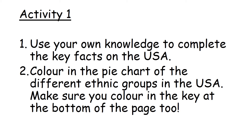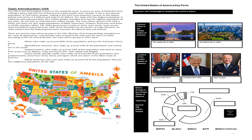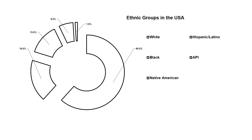Your first activity for today is to use your own knowledge to complete the key facts on the USA. It says to colour in the pie chart of the different ethnic groups in the USA, and make sure you colour in the key at the bottom of the page too. However, if you don't have access to this, you can just write down in your jotter the percentage that links to each ethnic group. These two pages from your booklet are available via Teams in the files folder, and you'll get a copy of your booklet when you return to school.